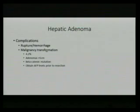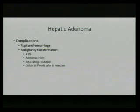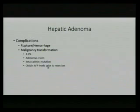The majority may be asymptomatic, but importantly, the complications associated with hepatic adenomas include rupture and hemorrhage, and malignant transformation — at a rate of about 4.2%, usually for adenomas greater than 5 centimeters. Malignancy is associated with beta-catenin mutations. If there is concern for malignancy, it's important to get an AFP level prior to resection, as it may influence the type of resection performed.